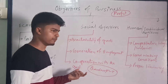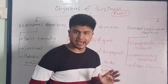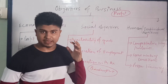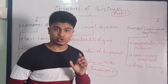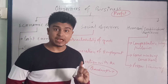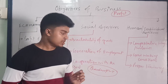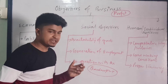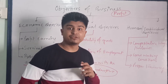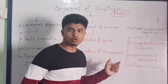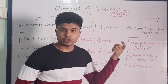Third social objective is cooperation with the government. Every area or country is governed by a particular system, and rules and regulations are enacted by the government. It is the responsibility of the business to follow all rules and regulations enacted by the government and to cooperate in order to implement a smooth environment in that area.